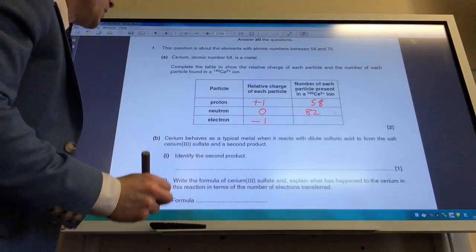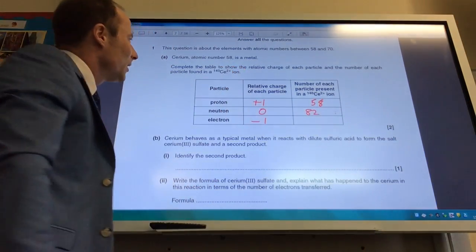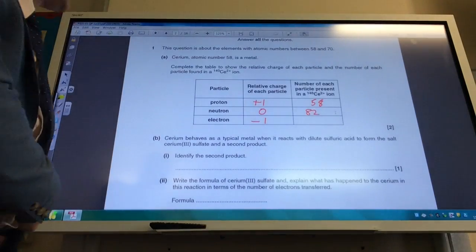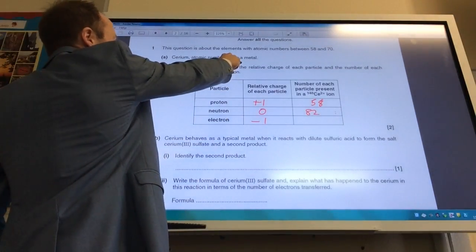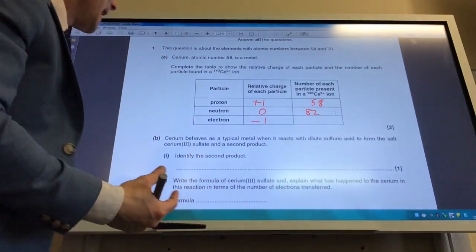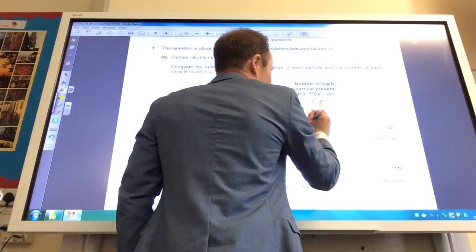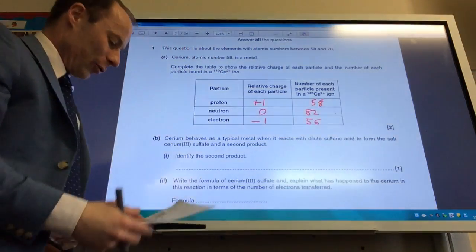The number of electrons: you've got to be careful here because it's the ion. If it's got an atomic number of 58, the atom would have 58 electrons. However, it's the ion, so it's lost two of those electrons, so it now has 56 electrons.